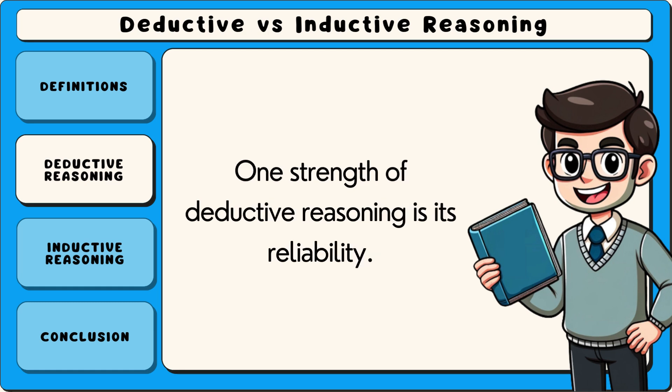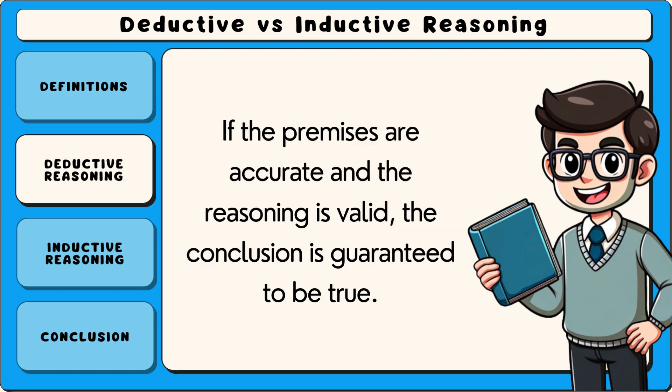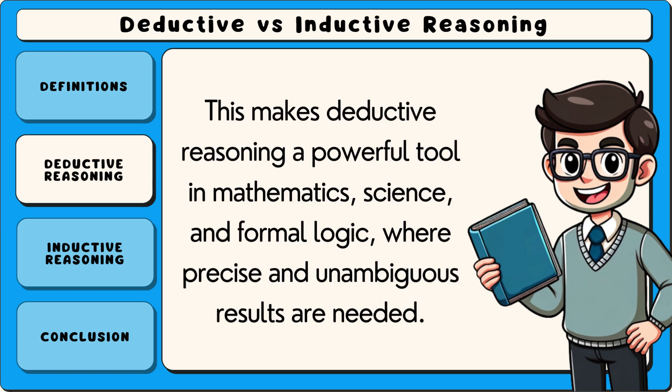One strength of deductive reasoning is its reliability. If the premises are accurate and the reasoning is valid, the conclusion is guaranteed to be true. This makes deductive reasoning a powerful tool in mathematics, science, and formal logic, where precise and unambiguous results are needed.